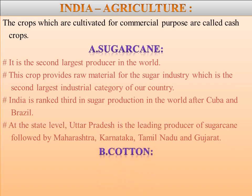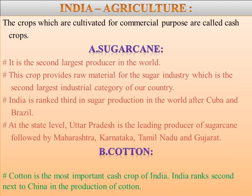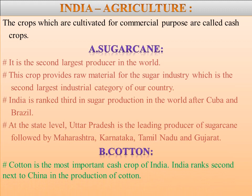Next we are going to learn about cotton. Cotton is the most important cash crop of India. It provides raw materials to the largest industry of India. India ranks second, next to China, in the production of cotton. About 79% of the total area under cotton production in the country is contributed by four states: Gujarat, Maharashtra, Andhra Pradesh, and Punjab.